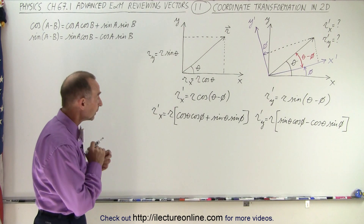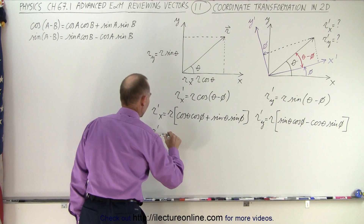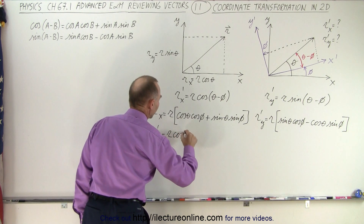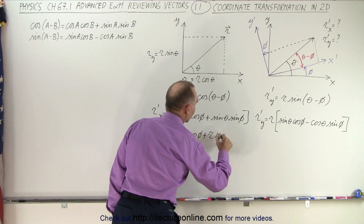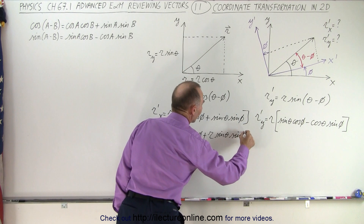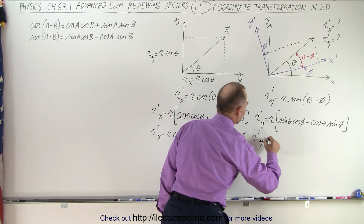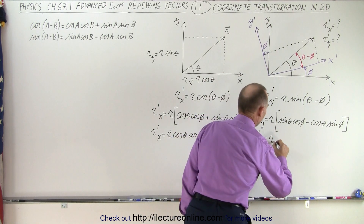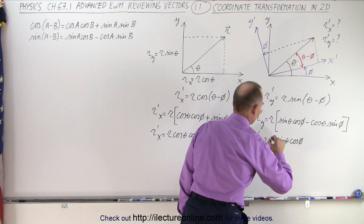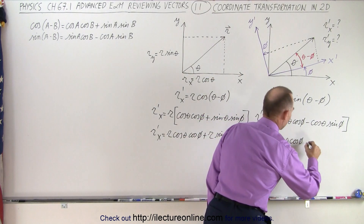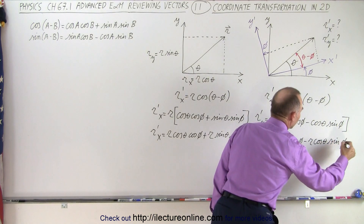Now we're going to multiply out the R. So we have R prime of X, which is equal to R times cosine theta times cosine phi, plus R times sine of theta times sine of phi. And then R prime Y is equal to R times sine of theta times cosine phi, minus R times cosine of theta times sine of phi.